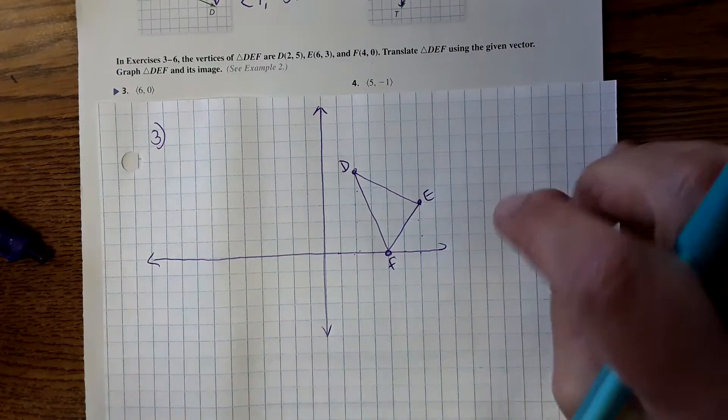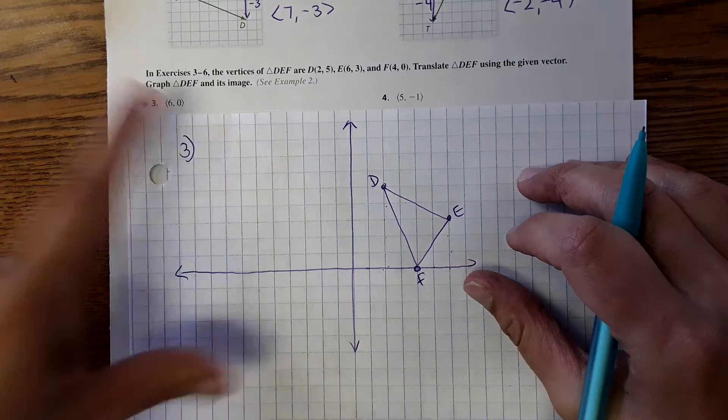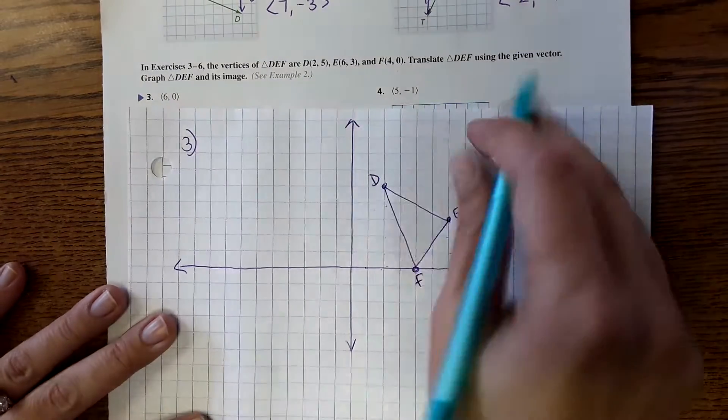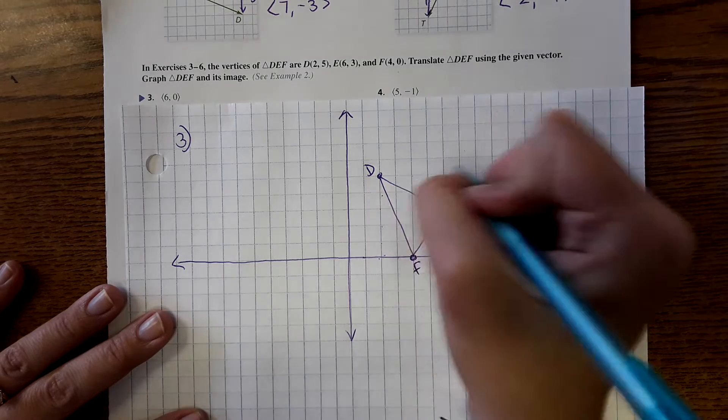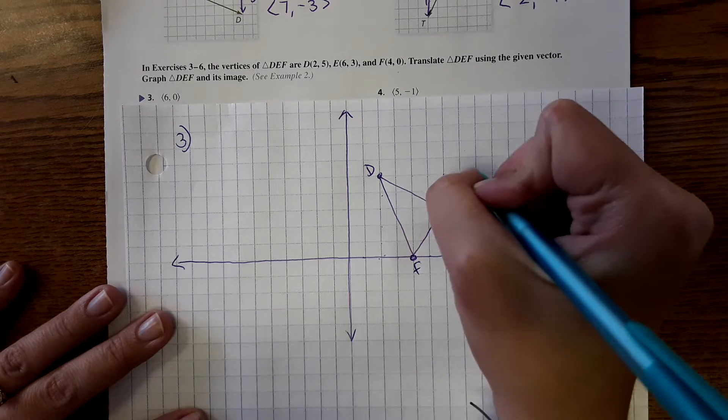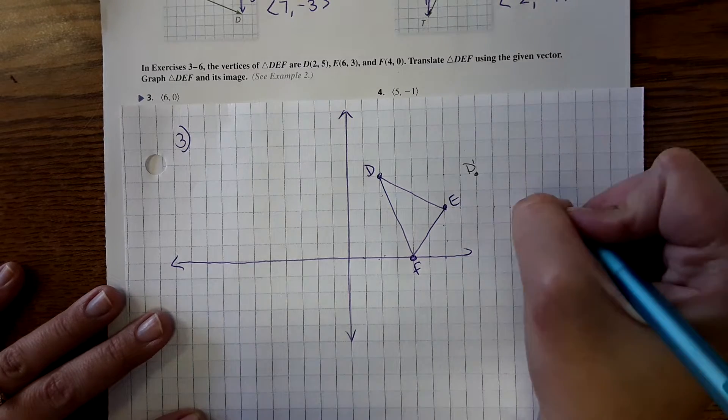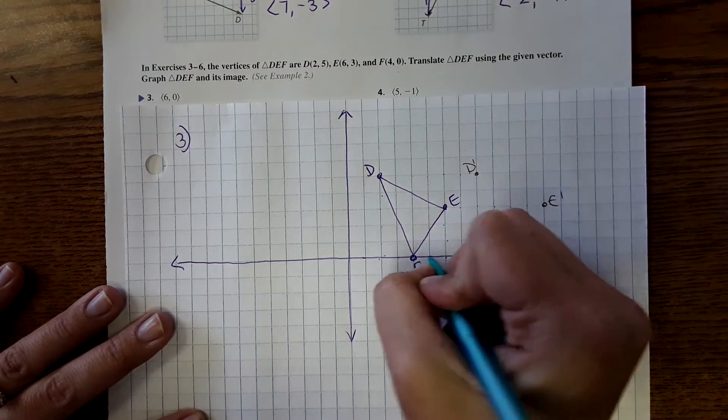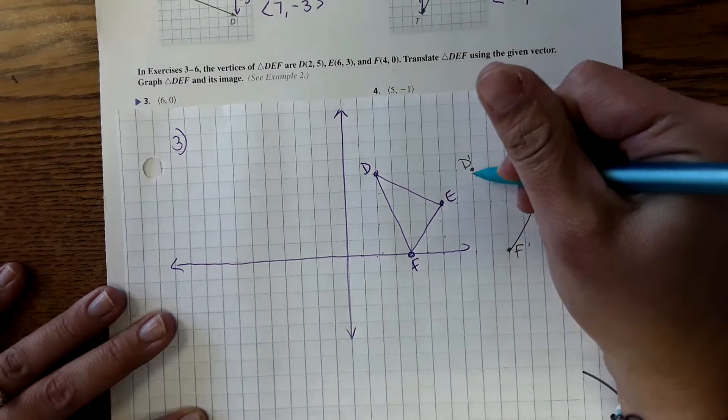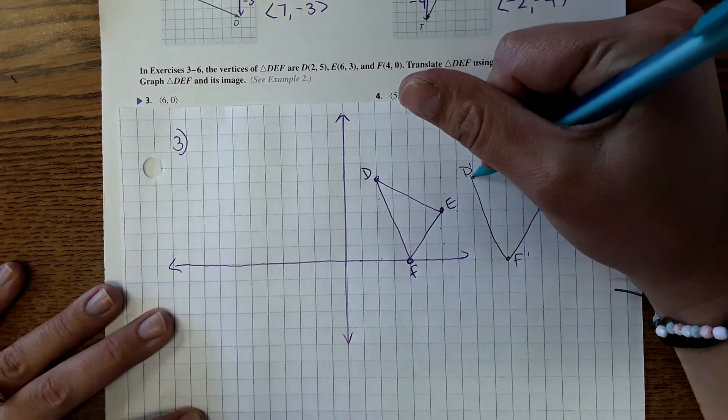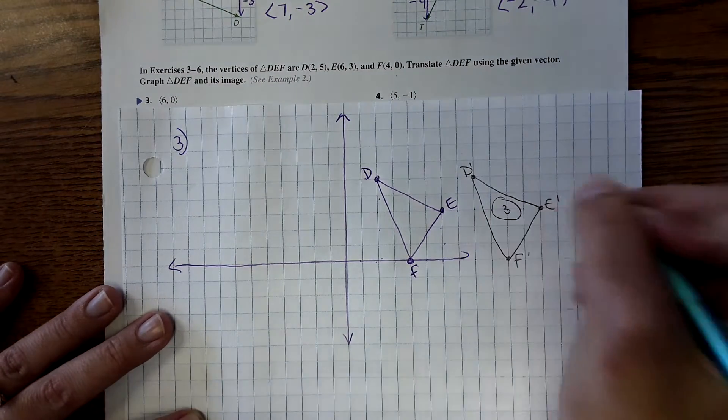Now we're going to graph the translations. The first one, it says 6, 0, so that means to the right, 6. So each point, I'm going to move to the right, 6 units. So this will be D prime, E prime, and F prime. And there is our translation there. So I'm going to label that number 3, and just put a 3 inside.